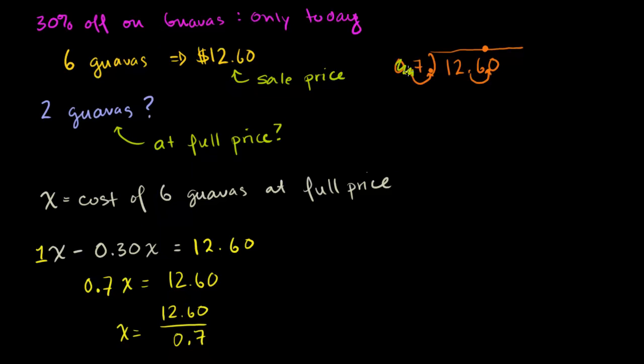And we're ready to just do straight up long division. So 7 goes into 12 one time. 1 times 7 is 7. 12 minus 7 is 5. Bring down the 6. 7 goes into 56 eight times. 8 times 7 is 56. And then we have no remainder. So it's 18, and there's nothing behind the decimal point. So it's $18. So X is equal to $18.